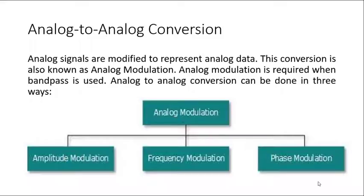This conversion is also known as analog modulation — analog to analog conversion. Analog modulation is required when band pass channel is used. Analog to analog conversion can be done in three ways.